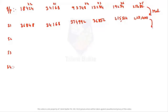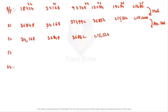From step one to step two, ascending order happens. The smallest number is 34,168. Next is 36,848. Then 36,852.